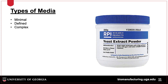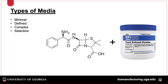Complex media is commonly used in research labs and consists of components such as yeast extract or hydrolyzed protein. Selected media includes an ingredient that allows one type of microorganism to grow while preventing the growth of others. The most common example is the use of antibiotics to select for bacteria that uptake a plasmid containing the corresponding antibiotic resistance gene.